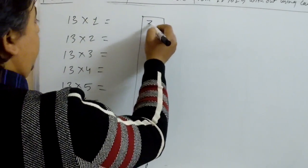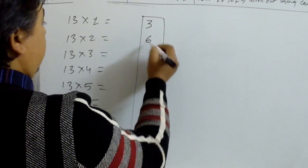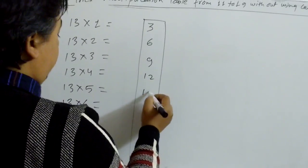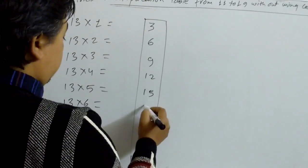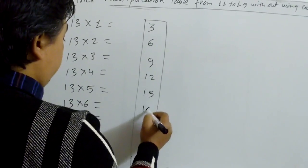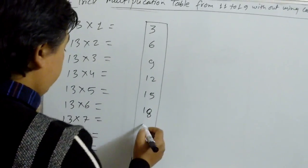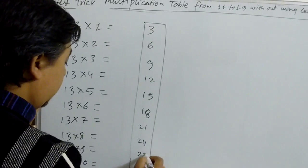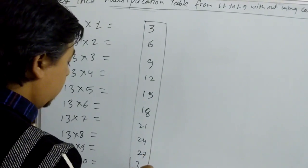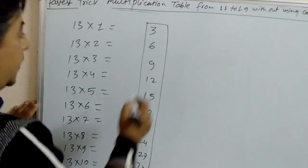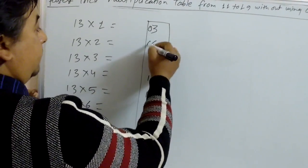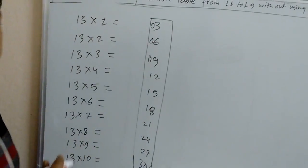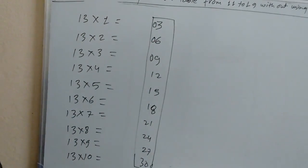3×1 is 3, 3×2 is 6, 3×3 is 9, 3×4 is 12, 3×5 is 15, 3×6 is 18, 3×7 is 21, 3×8 is 24, 3×9 is 27, 3×10 is 30. Now make each a double digit and apply the same method as before.